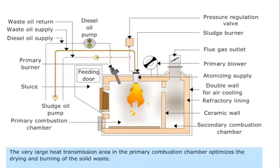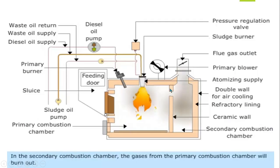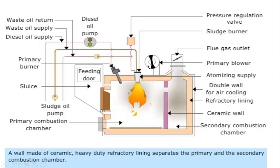The very large heat transmission area in the primary combustion chamber helps to optimize burning and drying of the solid waste. That is why the primary combustion chamber is big — it provides a large heat transmission area which optimizes the burning and drying out of solid waste. The remaining uncombusted product is burned in the secondary chamber, where the gas from the primary chamber is burned out. There is a ceramic wall separating the primary and secondary chamber, made up of heavy-duty refractory ceramic lining.